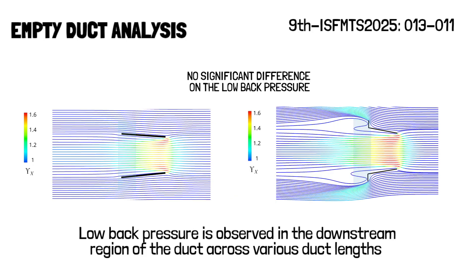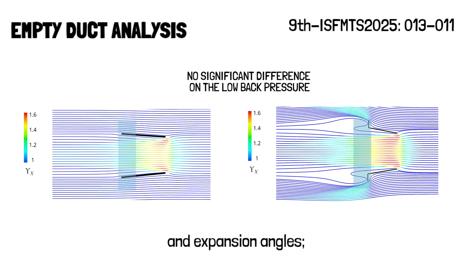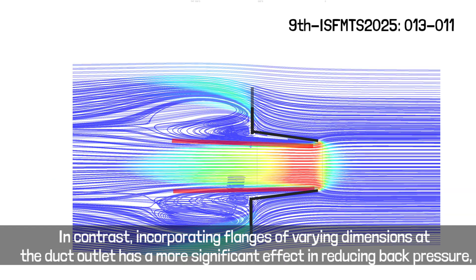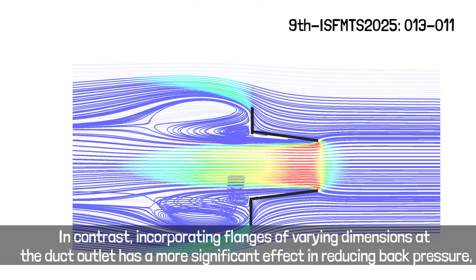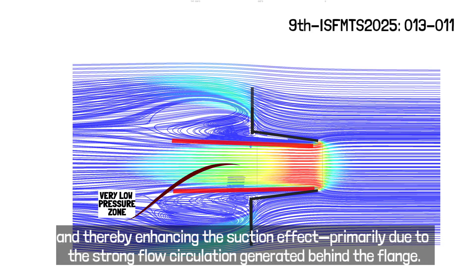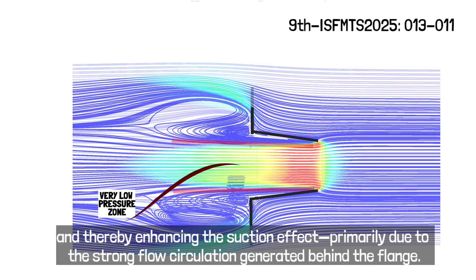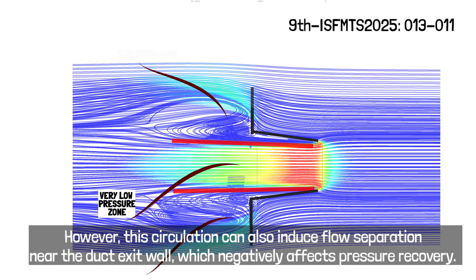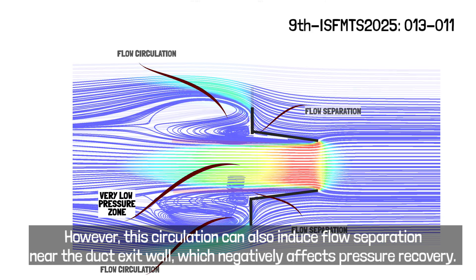Low back pressure is observed in the downstream region of the duct across various duct lengths and expansion angles, though the differences between configurations are minor. In contrast, incorporating flanges of varying dimensions at the duct outlet has a more significant effect in reducing back pressure and enhancing the suction effect, primarily due to strong flow circulation generated behind the flange. However, this circulation can also induce flow separation near the duct exit wall, which negatively affects pressure recovery.